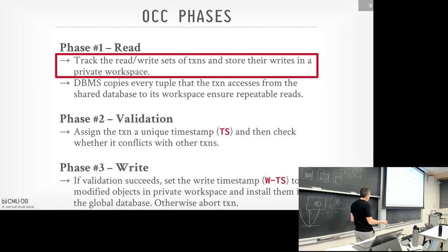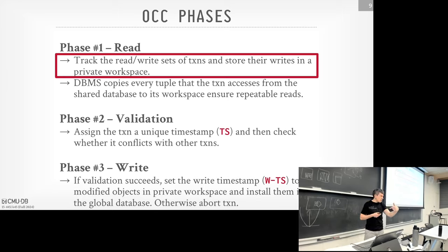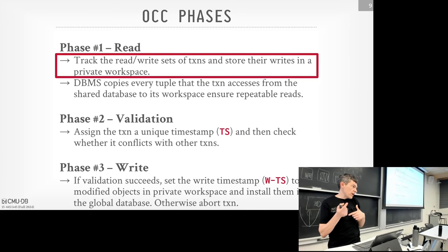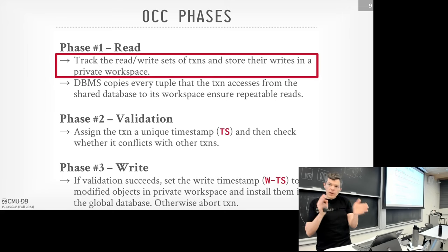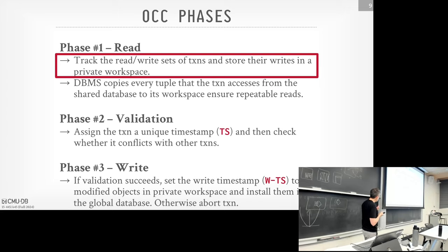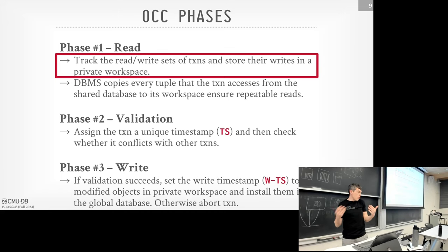Once the transaction says it wants to commit, you automatically switch into the validation phase. This is where the database system assigns a timestamp to your transaction — so transactions don't get timestamps when they show up; they get timestamps only when they try to commit. Then it checks to see whether it conflicts with other transactions, either ones that have already completed or ones actually running right now. If you pass the validation phase, you enter the write phase, where you apply all the changes from your private workspace to the global database, and update the write timestamp on every tuple.